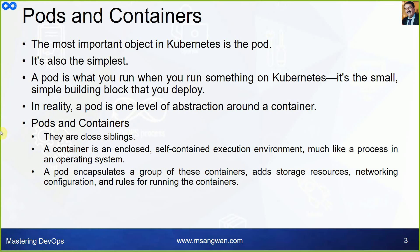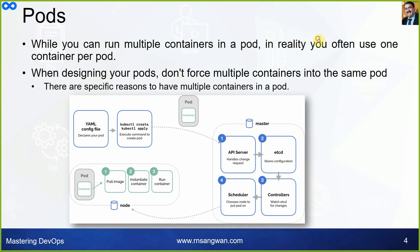The most important object in Kubernetes is the pod, and it is also the simplest. A pod is what you run when you run something on Kubernetes — it is a small, simple building block that you deploy on your cluster. In reality, a pod is one level of abstraction around a container. Pods and containers are close siblings. A container is an enclosed, self-contained execution environment, much like a process in an operating system. A pod encapsulates a group of containers and adds storage, networking configuration, and rules for running the containers. While you can run multiple containers in a pod, in reality you often use one container per pod, and you don't force multiple containers into the same pod unless there are specific reasons to do so.